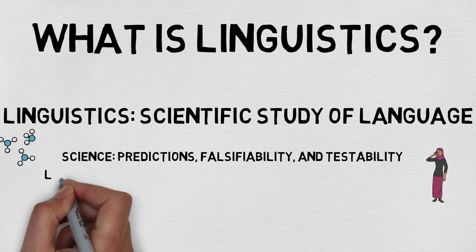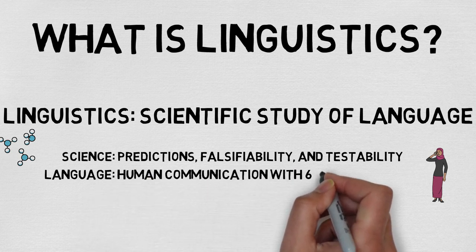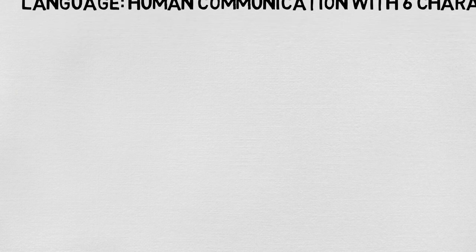Language, on the other hand, is a system of communication that is specific to human animals. While most animals have some way of communicating in a rich capacity, human language is unique in that we have found seven attributes that set it apart.